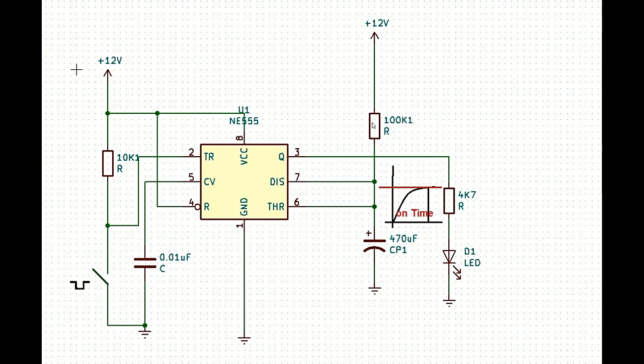It will be charged up until 2 by 3 of the VCC and when it exceeds the voltage 2 by 3 VCC, output will become low and again capacitor starts to discharge.